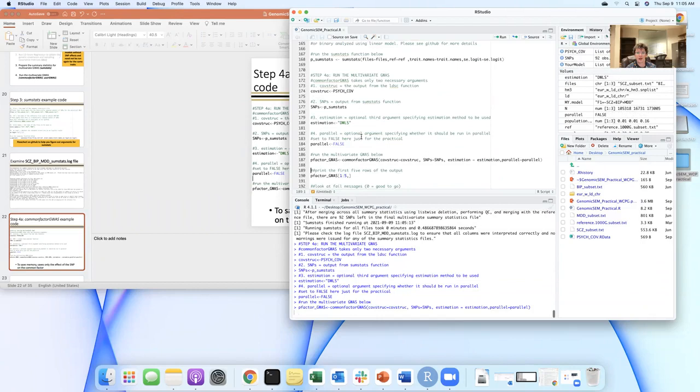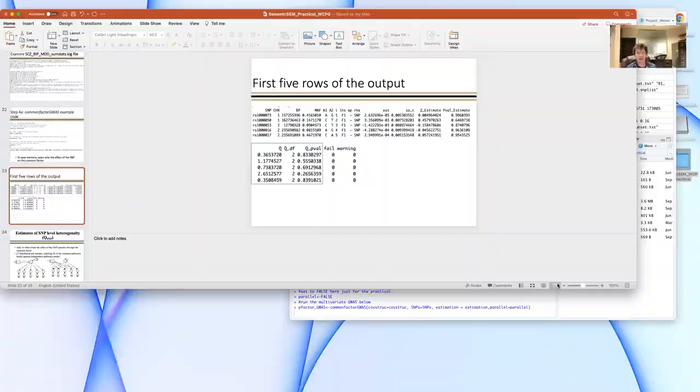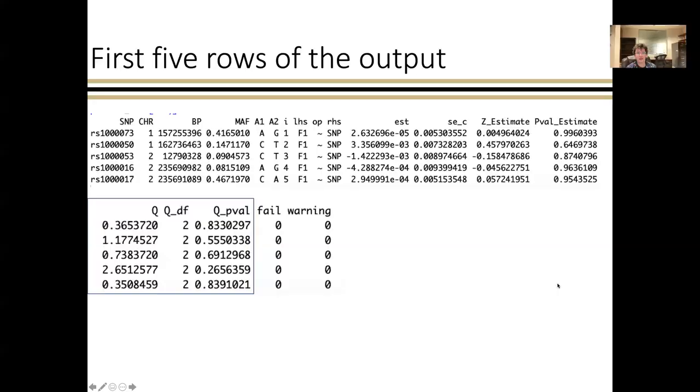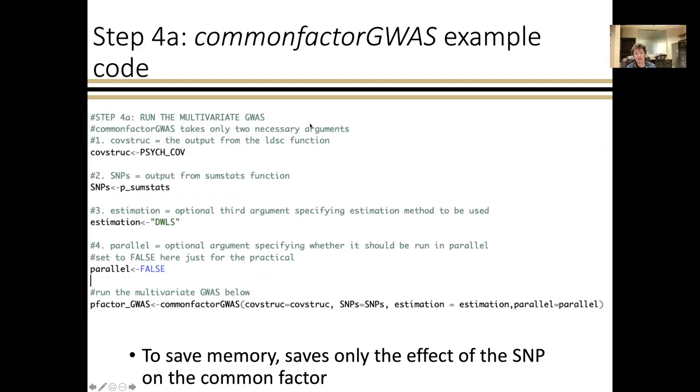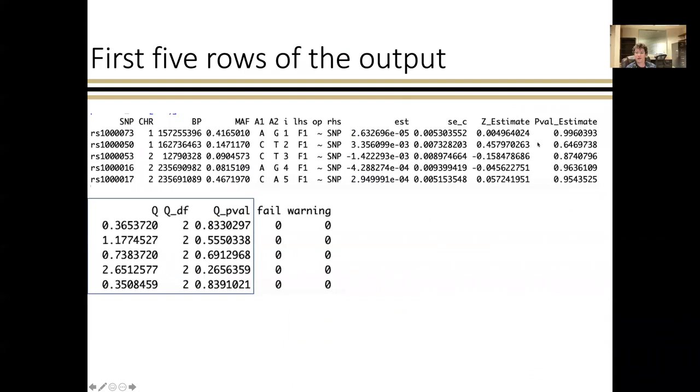So this is going to produce output that looks like this. There's a lot of columns. It's got the SNP chromosome-base pair minor allele frequency, A1 and A2, the parameter being estimated, which is the effect of the SNP on the factor, and the estimate sandwich-corrected standard error, the estimate p-value, and then this other metric that we call Q-SNP, which indexes whether or not that SNP really does not fit the model.